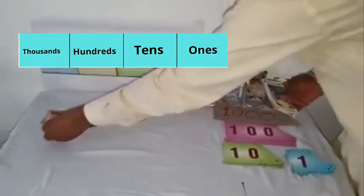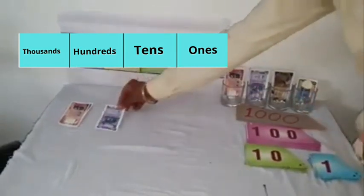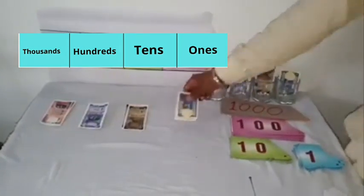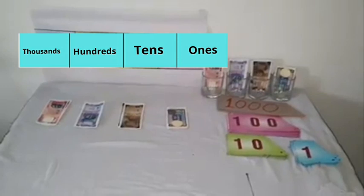Here we have 2 notes of 1,000 rupees, 1 note of 100 rupees, 2 notes of 10s and 5 notes of 1 rupee. Now, we will use the man cards for 2,125. Here it is.